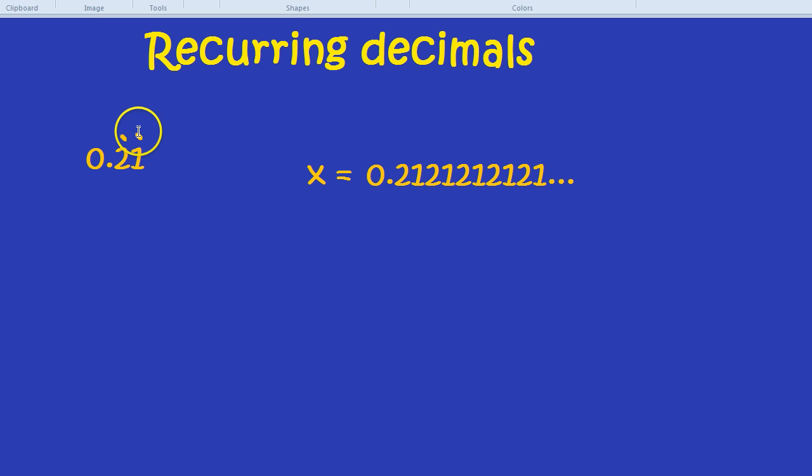Notice there are two dots above the number. Or more importantly, there are two numbers that are recurring. When there are two numbers that are reoccurring, we multiply the expression by 100. So in this case, it would be 100x equals, because we've multiplied both sides by 100. Now when we multiply this long expression by 100, the decimal place moves twice to the right.